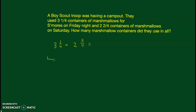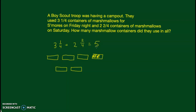We could use a picture. I draw three and one-fourth containers. Then I add two and two-fourths to that: two whole containers, and I add two-fourths to my original one-fourth. That gives me five whole containers and then three-fourths of another container.